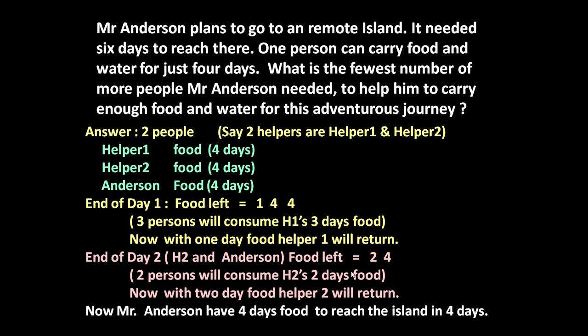Now how many days of journey are left? Four days. And Anderson is left with four days of food. So Mr. Anderson has exactly four days of food to reach the island in the next four days. In this manner, Anderson will reach the island with the help of two helpers — helper one and helper two.